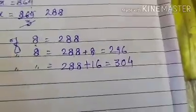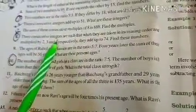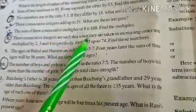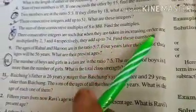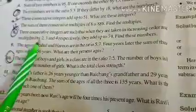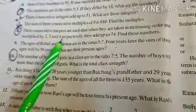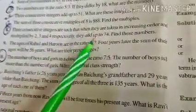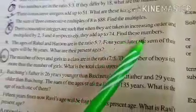Now next question. Three consecutive integers are such that when they are taken in increasing order and multiplied by 2, 3, and 4 respectively, they add up to 74. Find these numbers.